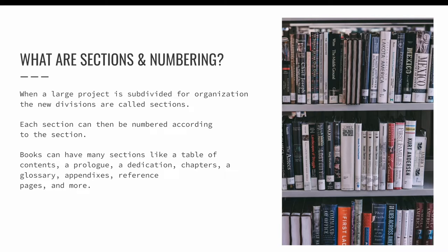Each section can then be numbered according to the section. Books, for example, have many sections, like copyright information, a table of contents, a forward or prologue, a dedication, many chapters, a glossary, appendices, reference pages, and more. Each subdivision of the book is defined as its own section for organization purposes, and then each section can be numbered as needed.